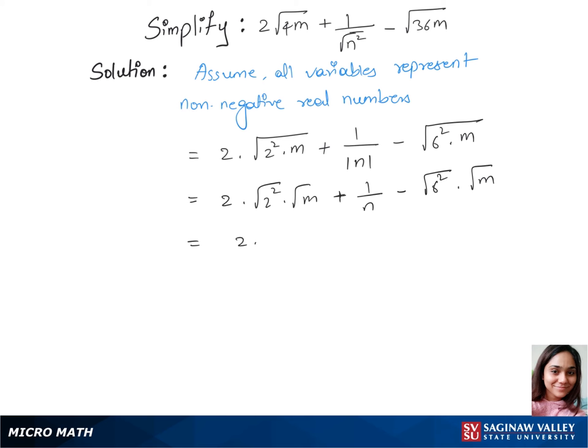Equals we have 2 times 2 times root m plus 1 over n minus 6 root m.